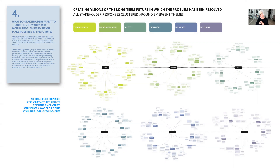the neighborhood, the city, the region or state, and the nation and the planet. This challenged participants to think systemically about how the problem manifests at the different levels of everyday life and imagine holistic, lifestyle-based alternatives.